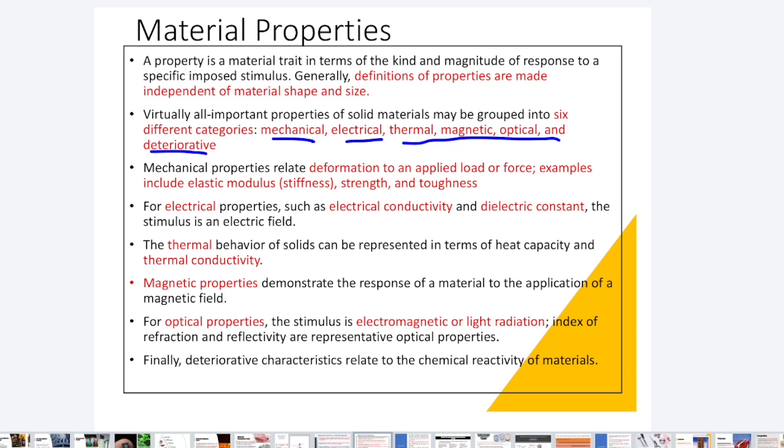Mechanical properties relate deformation to an applied force or load. Whenever we are applying a load or force on the material, what happens to the material? These properties tell us that. Examples include elastic modulus, strength, hardness, brittleness, and toughness — all of these come under the umbrella of mechanical properties.